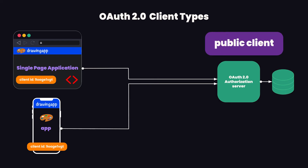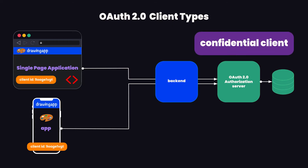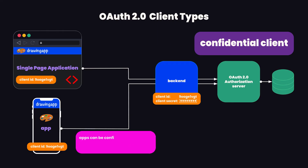These types of clients are called public clients. If you were to have your own backend, things would be different because now you can actually protect secrets, and upon registration you would get client credentials in the form of a client secret. It's also worth mentioning that a mobile application can also register itself dynamically with your authorization server — this is called dynamic client registration. Just remember that in theory, you can make a standalone mobile app a confidential client if you use dynamic client registration.